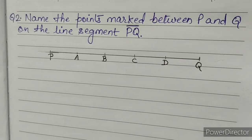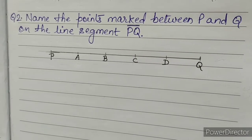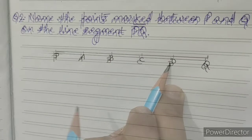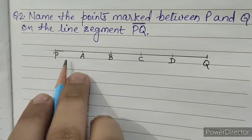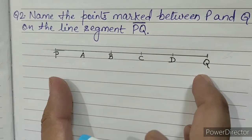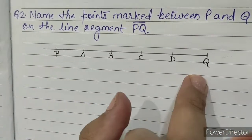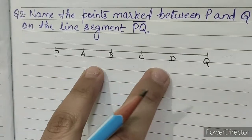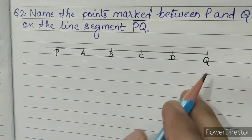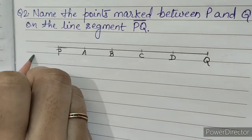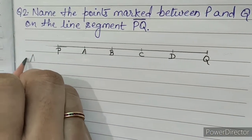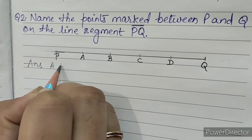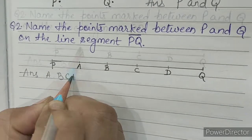Question number 2: name the points marked between P and Q on the line segment PQ. In this question we have to tell what points are marked between these 2 points P and Q. We can see A, B, C and D. These 4 points are marked between P and Q. So our answer is A, B, C, D.